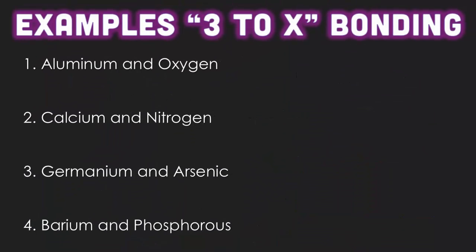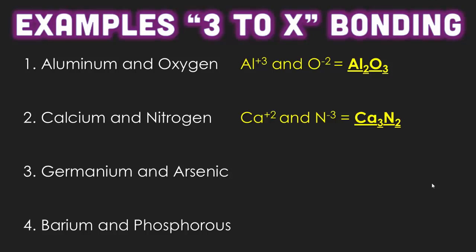Here are more examples. Aluminum and oxygen: aluminum has a positive three charge and oxygen has a negative two. The LCM between three and two is six. You need two aluminums to get six and three oxygens to get six, so the final formula is Al₂O₃. For calcium and nitrogen, calcium has a positive two charge and nitrogen has a negative three charge. The LCM is still six. You need three calciums for a positive six charge and two nitrogens for a negative six charge. Together they add to neutral.